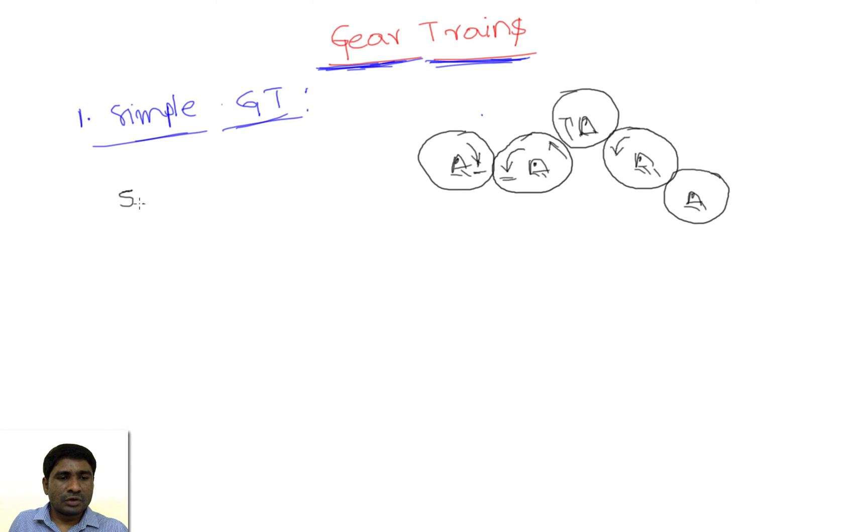Here we have defined one more term: speed ratio. If I take these two, let's name it as one, two, and this is three, and then four, and this is five. If it is rotating like this, this will rotate like this, so gear five is in the clockwise direction.